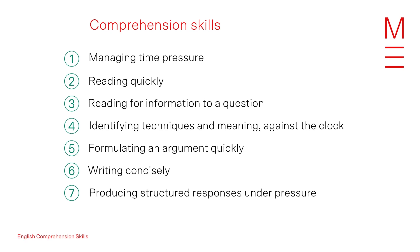Paper one section one asks students to analyze unseen texts and provide concise, insightful structured responses to questions about the texts and the common module rubric. The short answer section is asking you to demonstrate specific skills to the clock: managing time pressure, reading quickly for information, identifying techniques and meaning against the clock, formulating an argument quickly, writing concisely, and producing structured responses under pressure. Many students are expected to just have these skills as if they appear from nowhere, but they don't practice them in class at school.